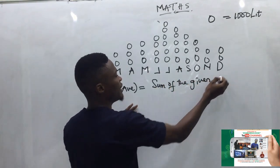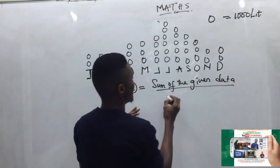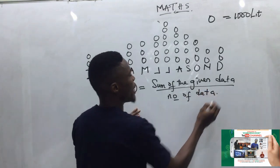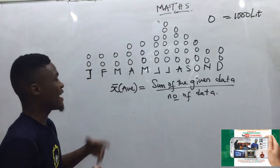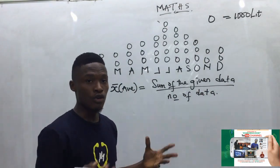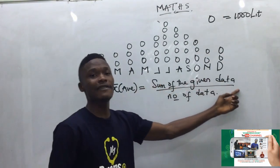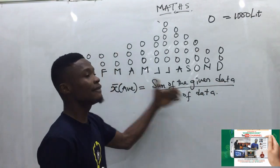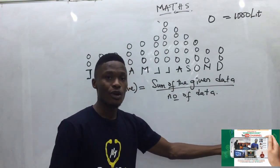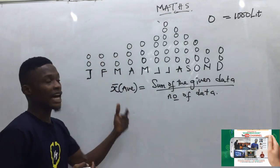The number of data — what that means is, if I want to find the average of any given group of data, all I need to do is add all the given data and divide by how many data values we have. From this question, we are asked to find the average volume of water consumed by the family.